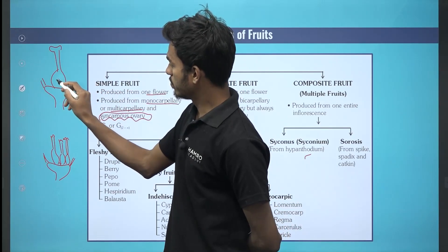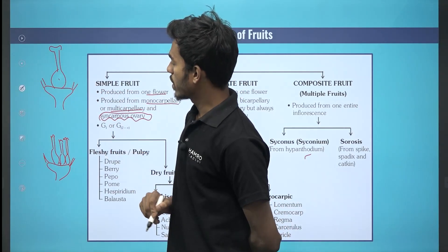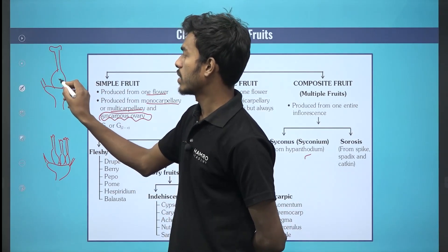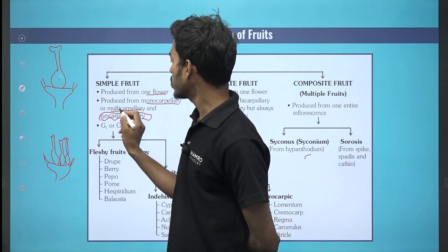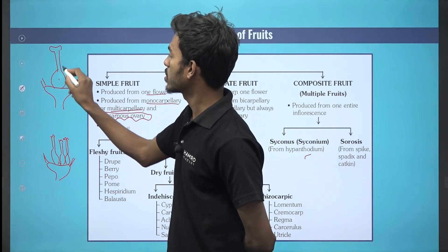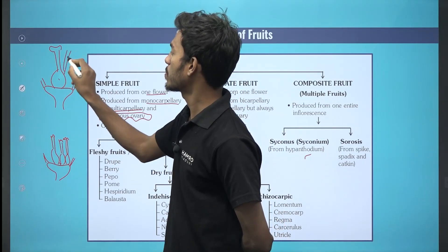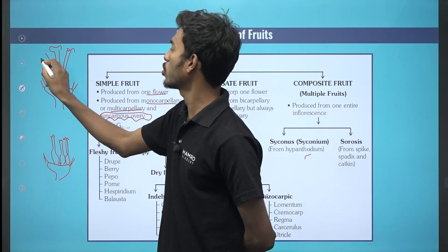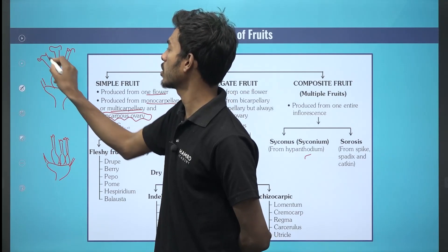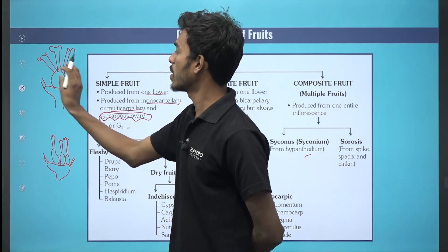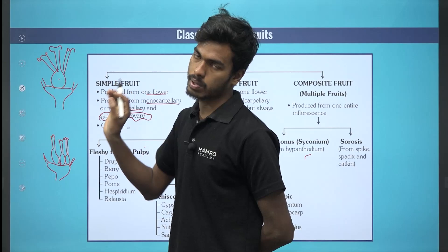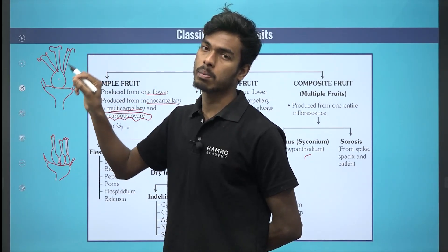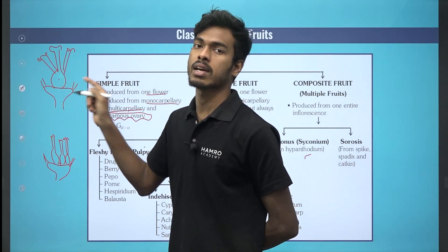We have ovaries. This is a monocarpellary ovary. This is a multicarpellary or syncarpus ovary. If you have a peanut, this is multicarpellary but syncarpus.